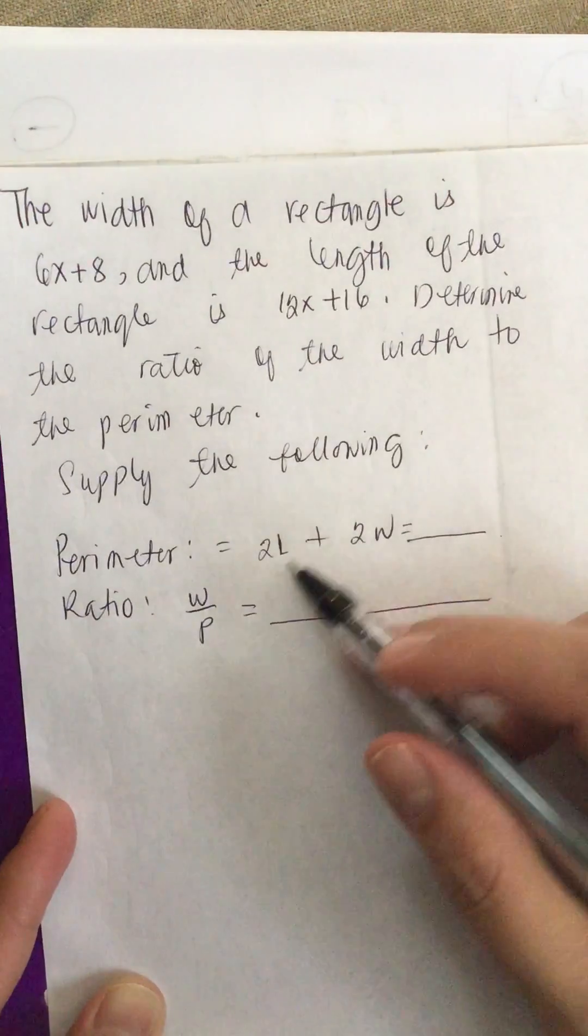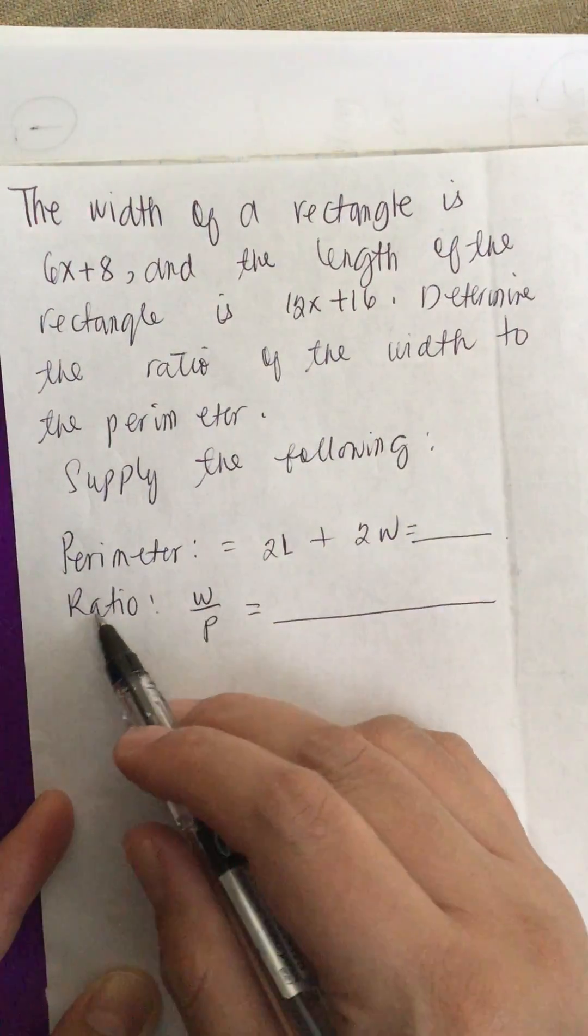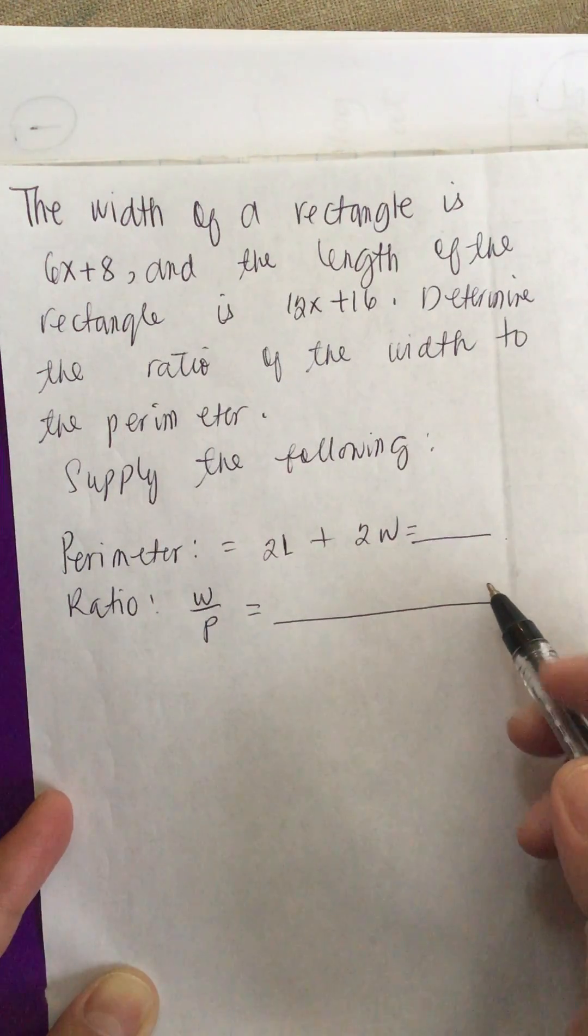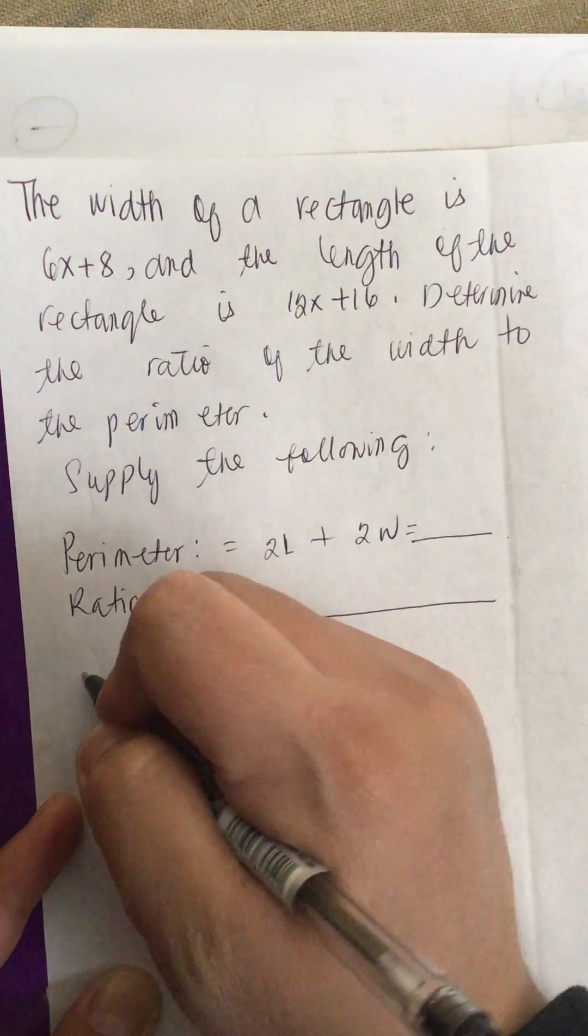Perimeter equals 2L plus 2W equals blank. Ratio W over P equals blank. And then we want the final answer.